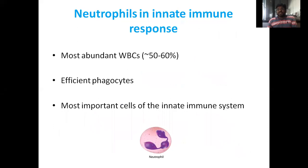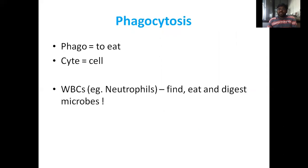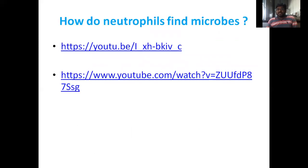Neutrophils in the innate immune system: neutrophils are the most abundant WBCs, making up around 50 to 60% of WBCs in the blood. They are very efficient phagocytic cells and the most important cells of the innate immune system. Phago means to eat and cyte means cell — phagocytosis is the eating of different microbes or foreign particles by cells. Neutrophils find, eat, and digest microbes. You can see videos of neutrophils finding and engulfing microbes.